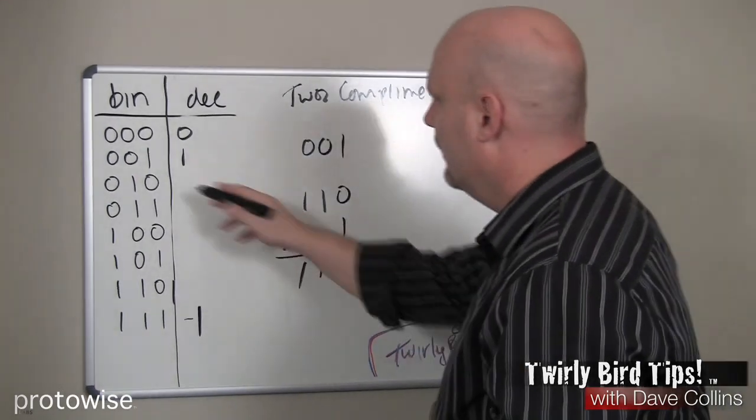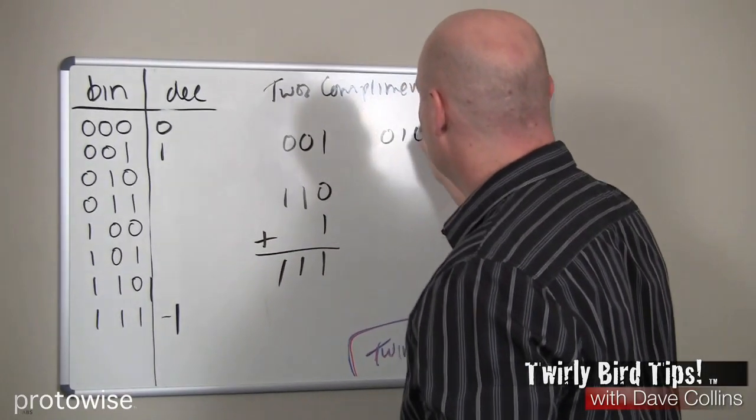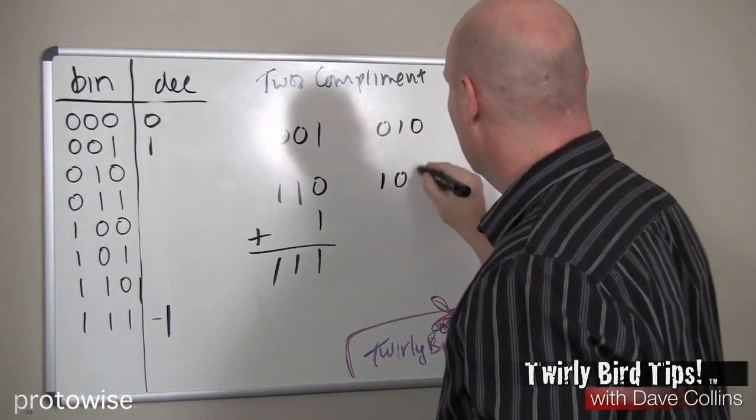Let's go ahead and do them all. 2, there's a 0, 1, 0. If we flip the bits, it gives us a 1, 0, 1.